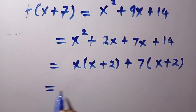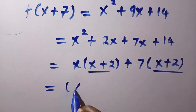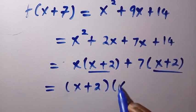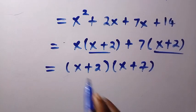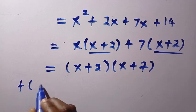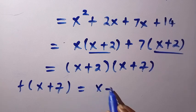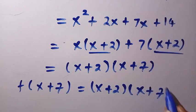Then after this, we have x plus 2 here. By taking only x plus 2, we are going to have x plus 7 as well. Here are the two factors of the quadratic we have. And everything here is equivalent to f of x plus 7, which is x plus 2 and x plus 7.